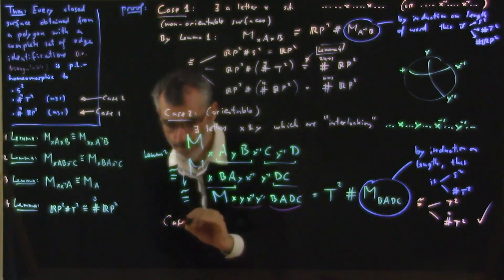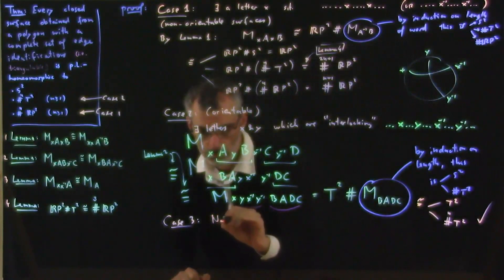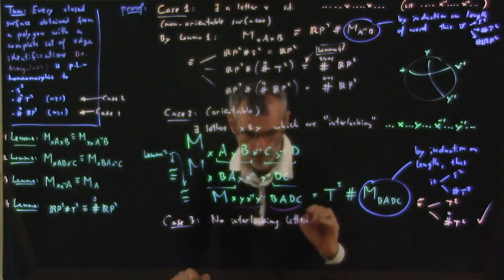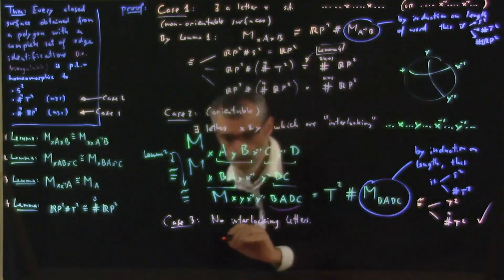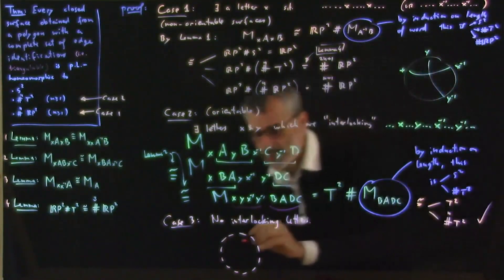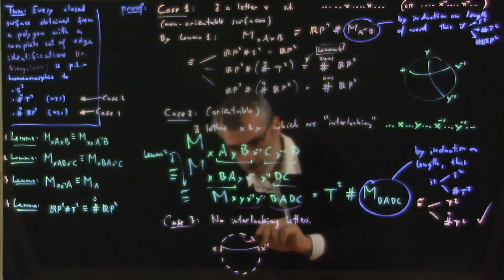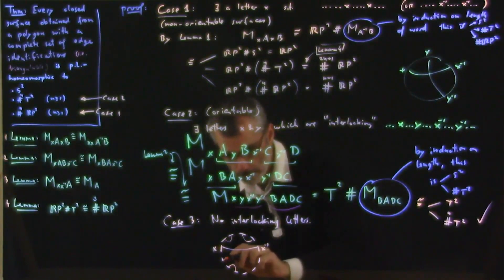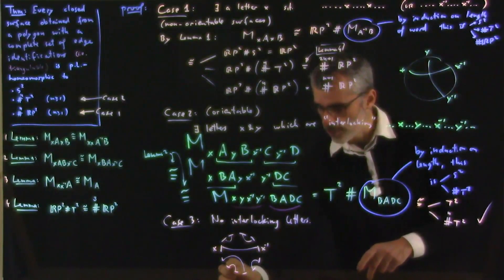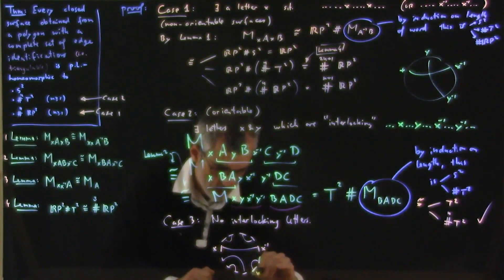And now, case 3 is the case when there are no interlocking letters. So, and if there are no interlocking letters, if I draw the letters on the boundary of the polygon, just like I did here, and I draw whenever I see an x and an x inverse, I draw a line connecting them, these lines never cross. And so we have a pattern that looks a bit like that. And in particular, we have the closest arcs, the arcs that are sort of closest, the smallest arcs, that correspond to edges that are in canceling position. So we have y, y inverse.